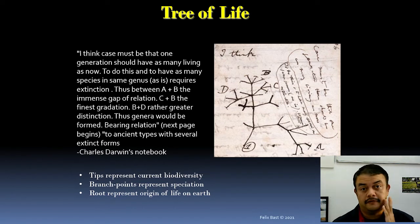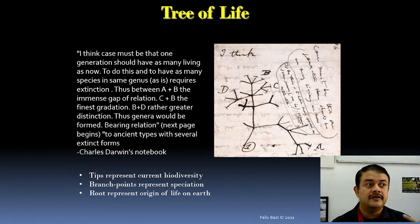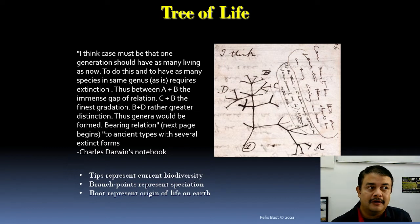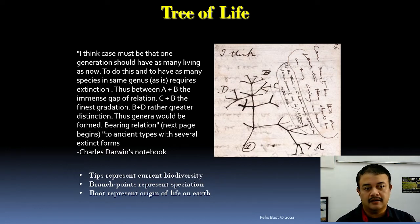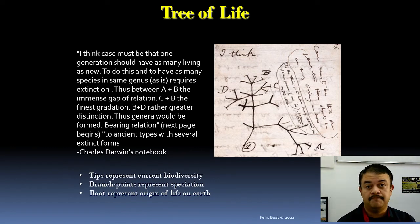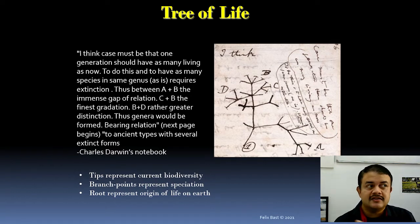The root represents the origin of life on Earth — abiogenesis — something that happened only once or a couple of times in the history of life. Why doesn't this happen now? Because the environment is no longer conducive. Even if abiogenesis occurred, new life could quickly be consumed by bacteria and heterotrophs. Abiogenesis requires specific conditions: an anoxic, high-energy, reducing atmosphere, and very high heat — requirements we don't have today except in places like deep mines.